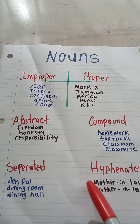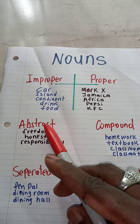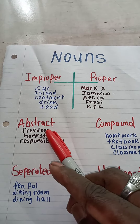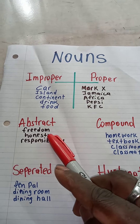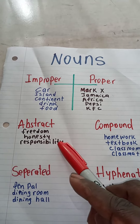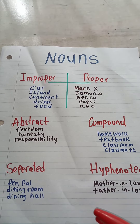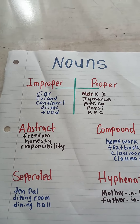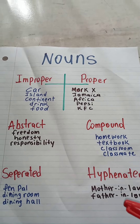You have other types of nouns, like nouns that are abstract. You could say freedom, honesty, responsibility — those are abstract nouns.